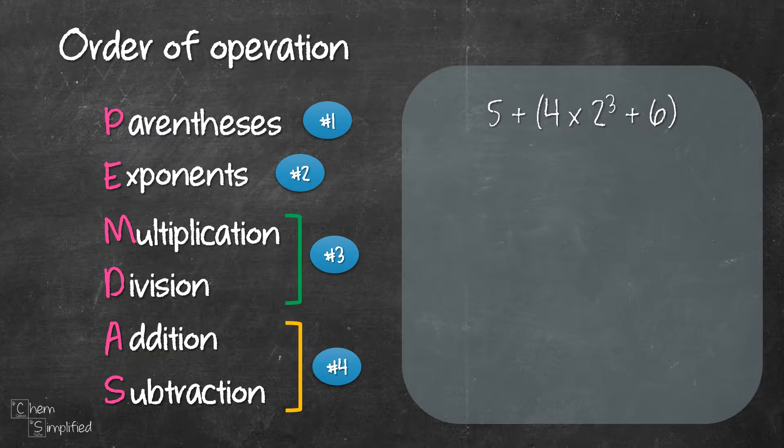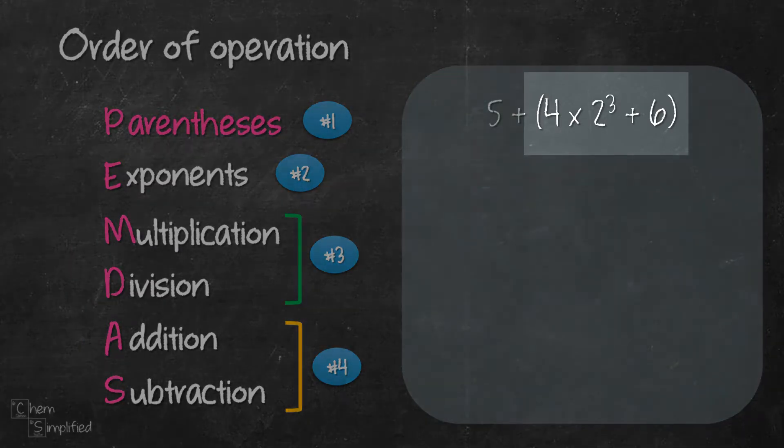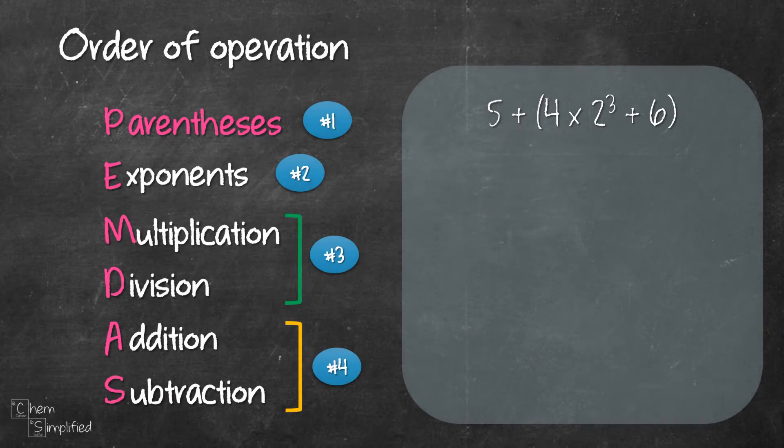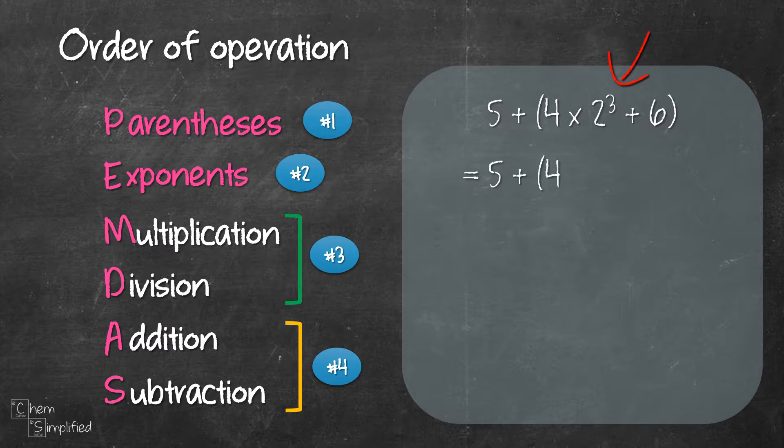Let's try out PEMDAS on a question. Step one, look for parentheses. Here it is. So that means we'll focus on solving everything inside this bracket. Next, for step two, we look for exponents. Yup, we have it 2 to the power of 3 so let's solve that. That's 8.